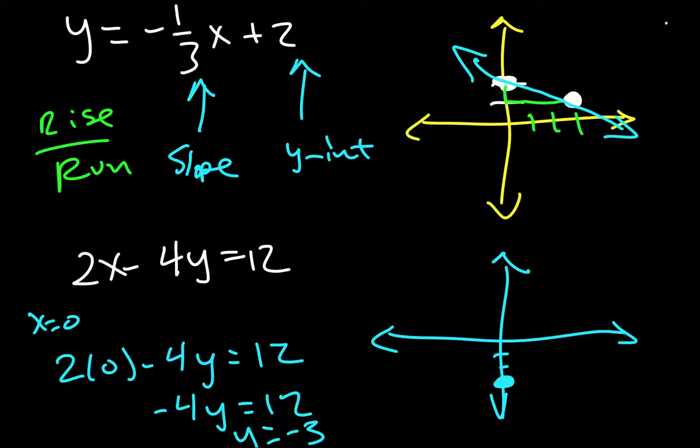Then I do the same thing when y equals 0. Plug in 0 right here. So I get 2x minus 4 times 0 equals 12. That cancels. 2x we divide by 2. And so x equals 6. And so the x-intercept 4, 5, 6.